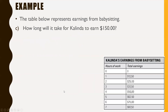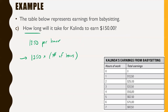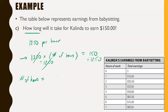Question C: how long will it take for Kalinda to earn $150? If she's getting $12.50 per hour, that means total earnings = 12.50 times the number of hours. So: 12.50 × hours = 150. Dividing both sides by 12.50 gives: hours = 150 / 12.50 = exactly 12. After 12 hours, Kalinda will have made $150.